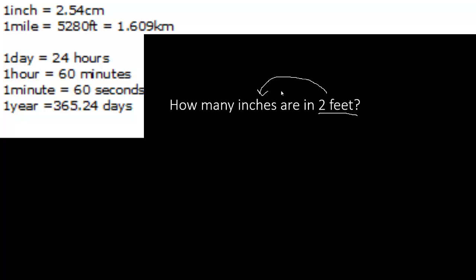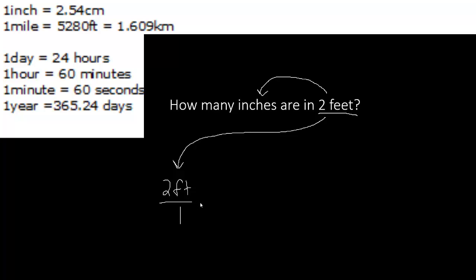We want to know how many inches are in two feet. The next thing we do is take what we know and stick it over here — we take two feet and put it over one. It's sort of like a division problem: two feet over one. Two divided by one is two, so two feet divided by one is two feet. Now we're trying to convert feet into inches, so we're going to use the factor label method. We take our first division problem — two feet divided by one — and we multiply it by another division problem.